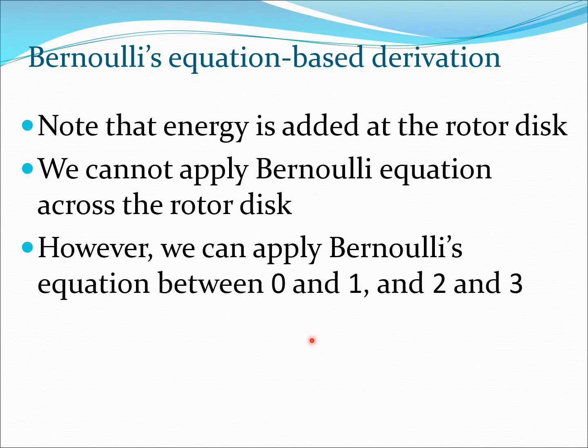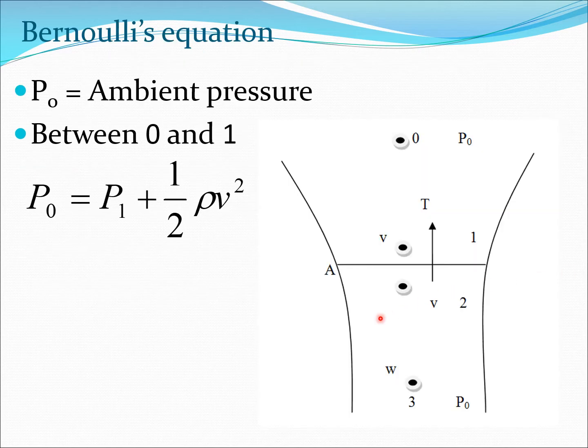We have to do this because at the rotor disk energy is put in, and that is the reason why the velocity goes up. Therefore we are going to apply Bernoulli's equation between 0 and 1, and 2 and 3. So let's do that now.